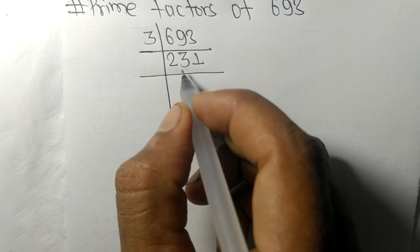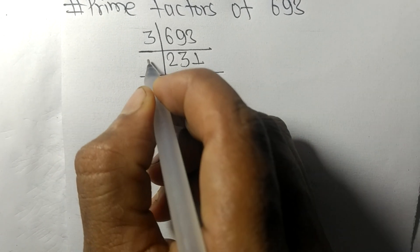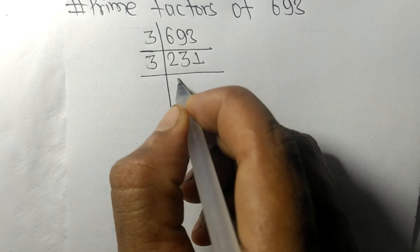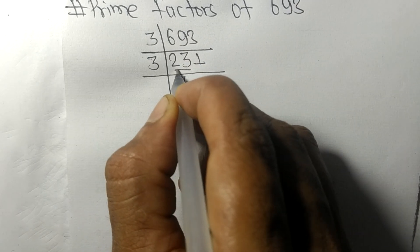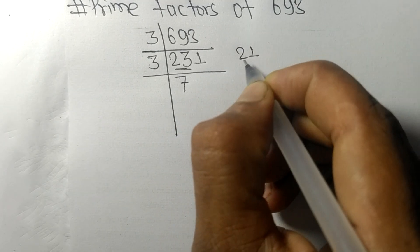We get 231 which is again divisible by 3. 3 times 7 is 21, remainder here 2 and 1 21. 3 times 7 is 21. So now we got 77.